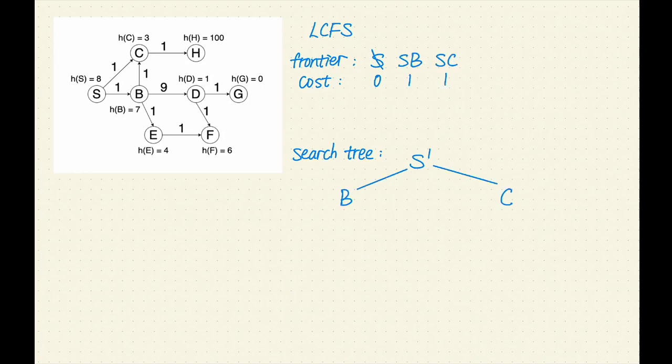Let's add Sb with the cost of 1 and Sc with the cost of 1 to the frontier. In the next few steps, we will explore all the paths with the cost of 1. Sb and Sc have the lowest cost of 1. Based on our tie-breaking rule, we'll remove Sb from the frontier. B is not a goal, let's expand it. B has three successors: C, D, and E. Let's add Sbc, Sbd, and SbE to the frontier and keep track of their costs: 2, 10, and 2.